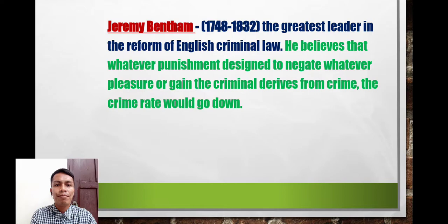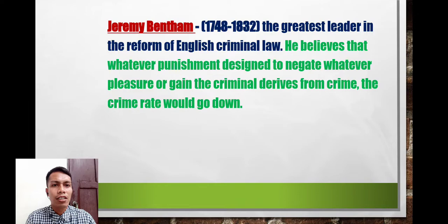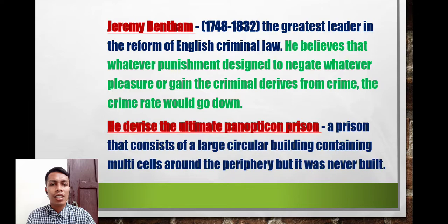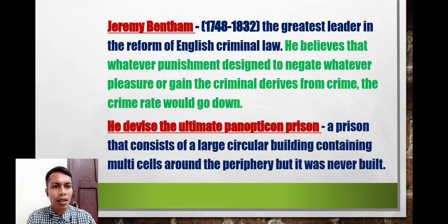Jeremy Bentham, 1748 to 1832, was the greatest leader in the reform of English criminal law. He believed that whatever punishment designed to negate the pleasure or gain a criminal derives from crime would cause the crime rate to go down. He also devised the ultimate panopticon prison — a prison consisting of a large circular building with multi-cells around the periphery — though it was never built.